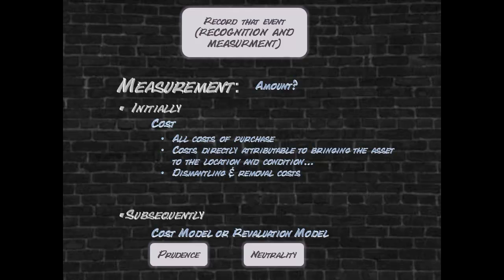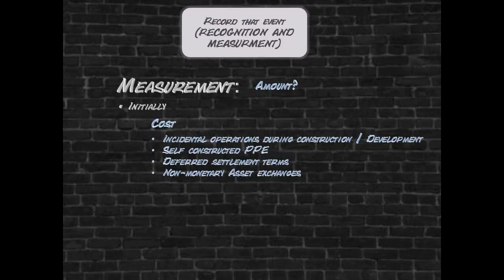Cost is defined in IAS 16 and the basic principle is that all costs attributable to bringing the asset to the location and condition for it to operate as intended by management will be capitalized as part of the original cost of the item. Specific rules are however also included in the standard to determine what can be included in the amount initially recognized as property, plant and equipment.